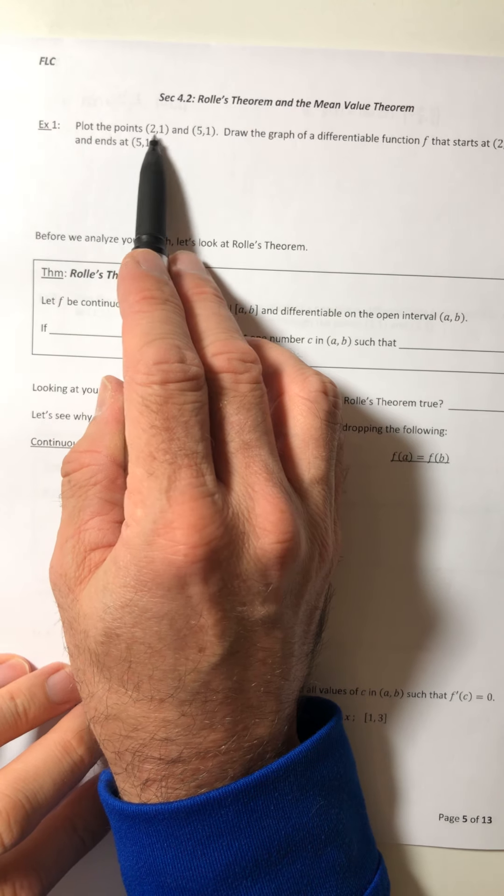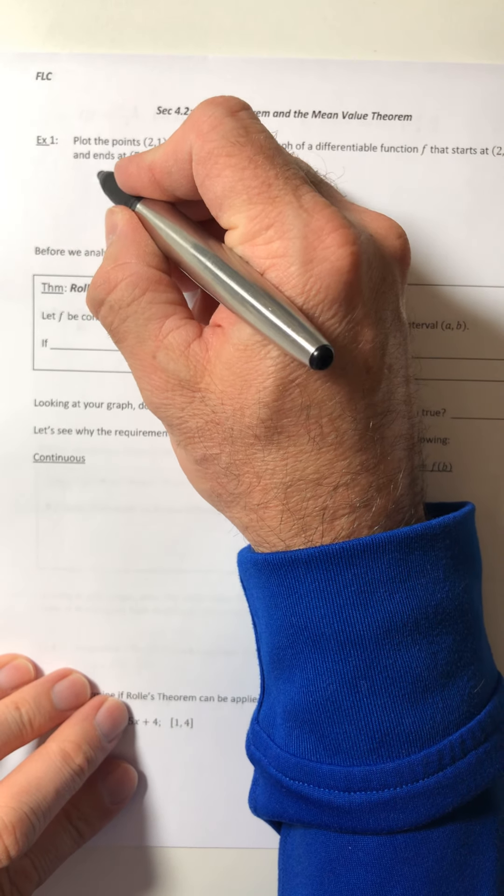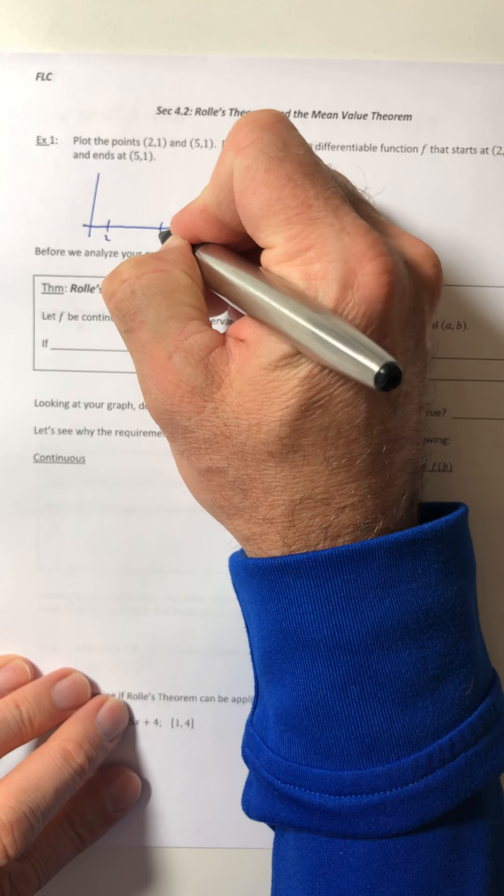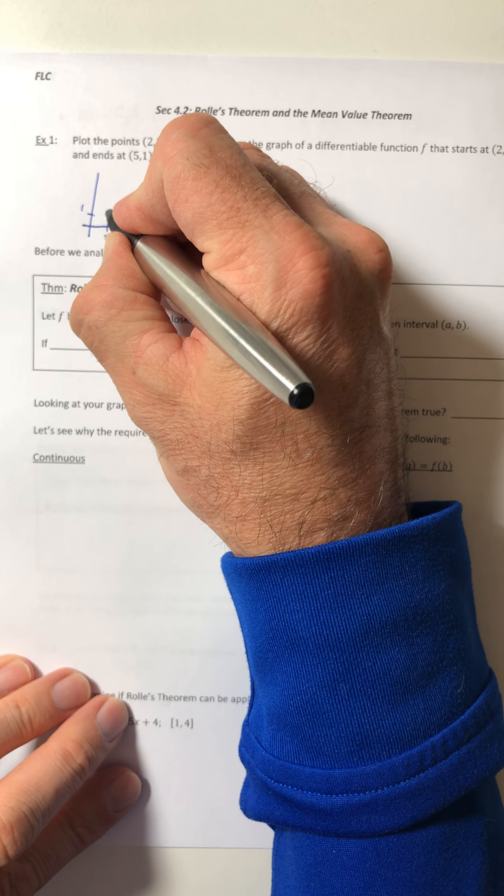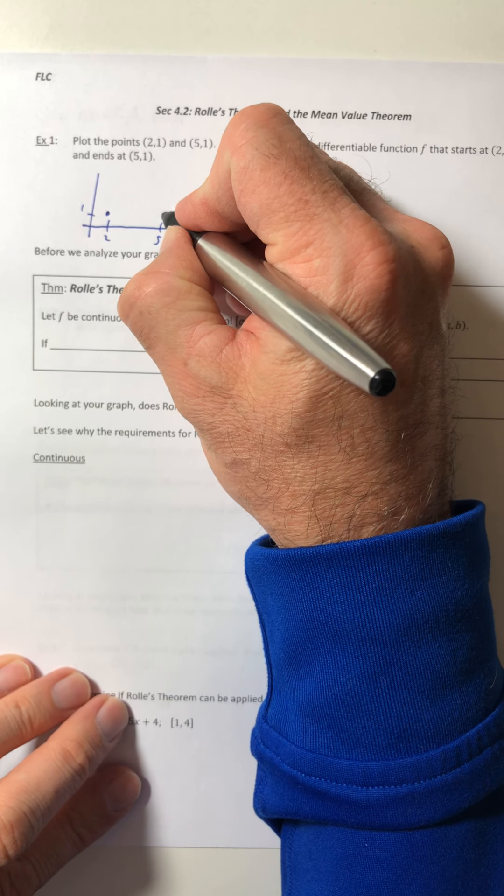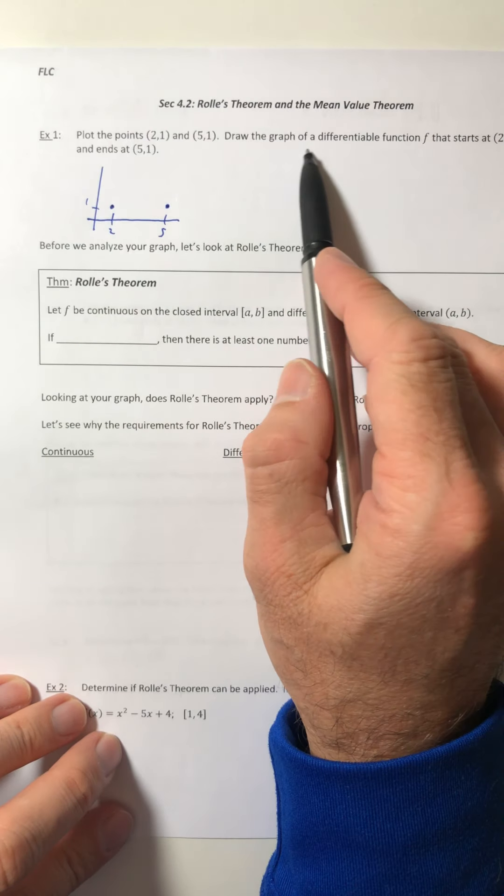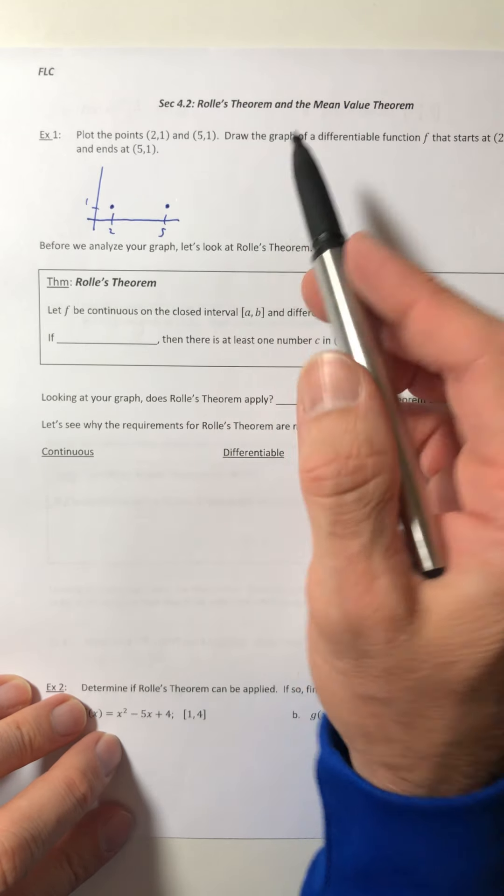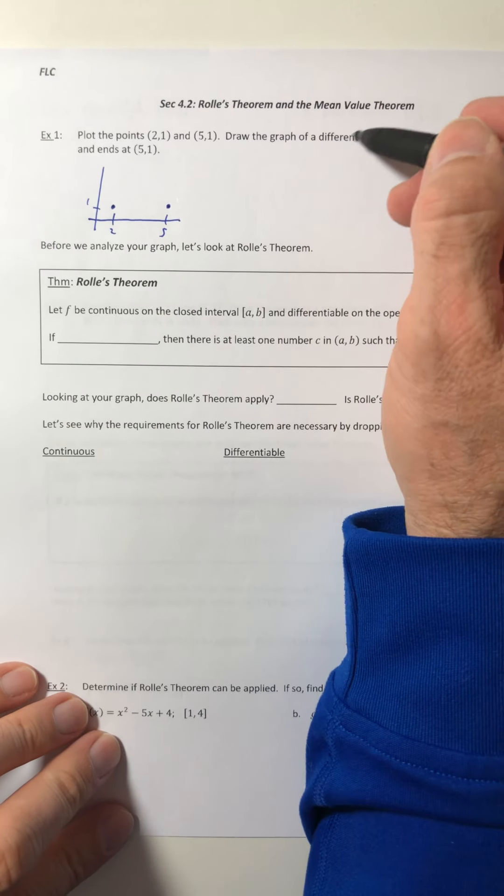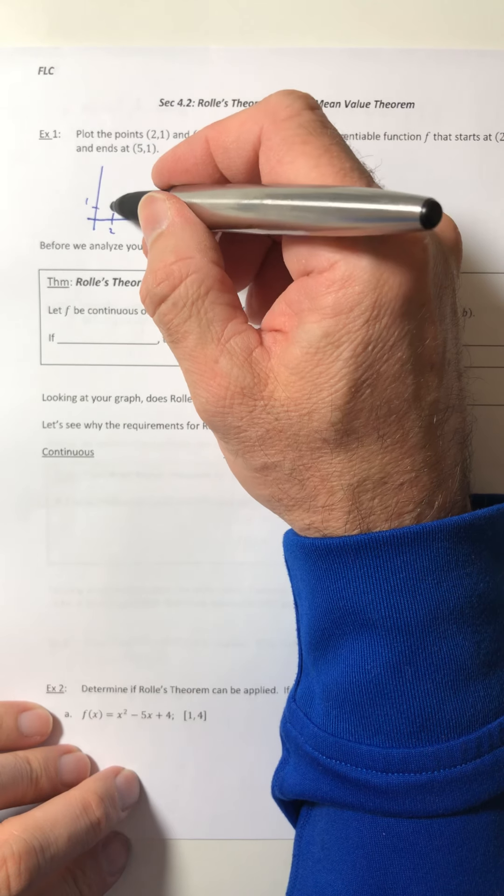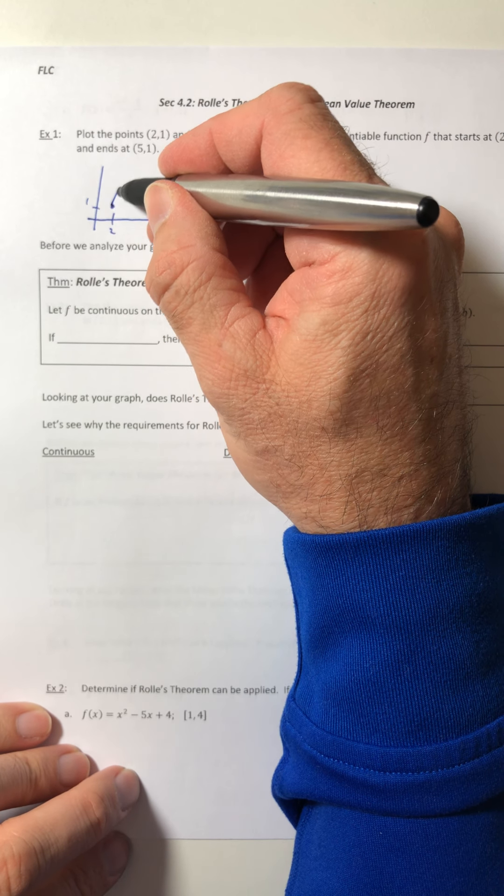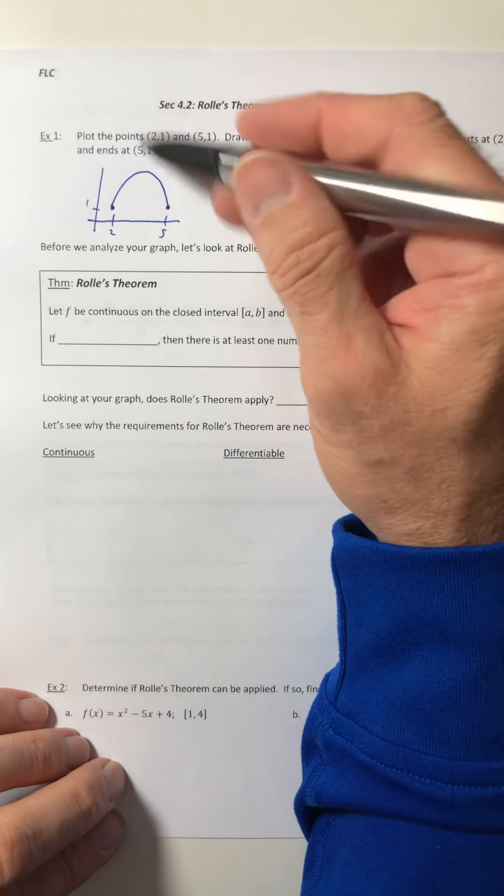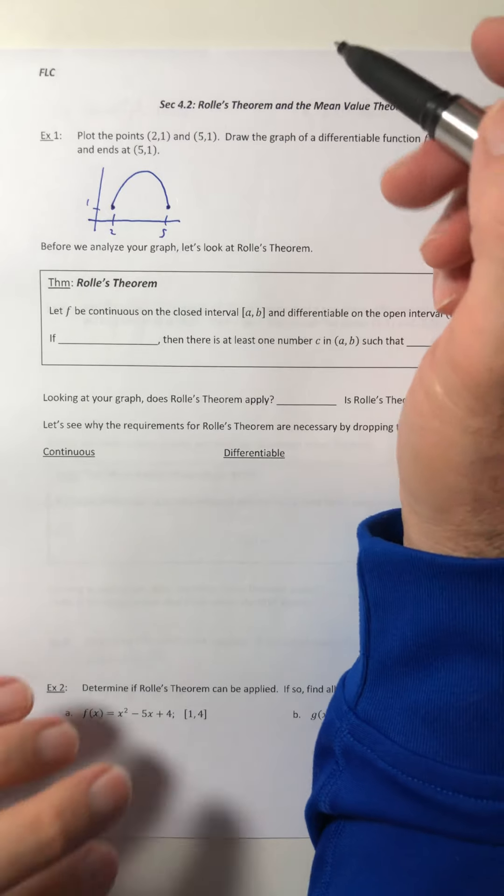So plot the points (2,1) and (5,1). All right, so here we go. Here's the two points. Draw the graph of a differentiable function f that starts and ends at those two points. All right, so as long as it's differentiable, you can draw whatever you want. So I'll just do a parabola like that. You can have a curve around as much as you want. Just no sharp points, no vertical asymptotes or whatever.